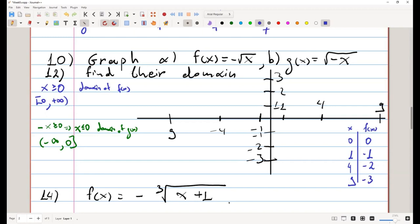So, let's go ahead and put those points in our graph. We have the point zero, zero, the point one comma minus one, the point four comma minus two, and the point nine comma minus three.